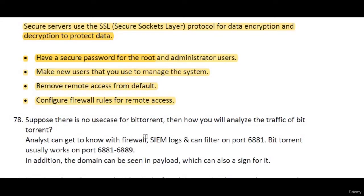Another scenario: suppose there is no use case for BitTorrent in your SIEM — no alert has been triggered — how can you analyze the traffic? This is quite simple. BitTorrent, or peer-to-peer software, generally works on port numbers 6881, 6889, and sometimes 6999.